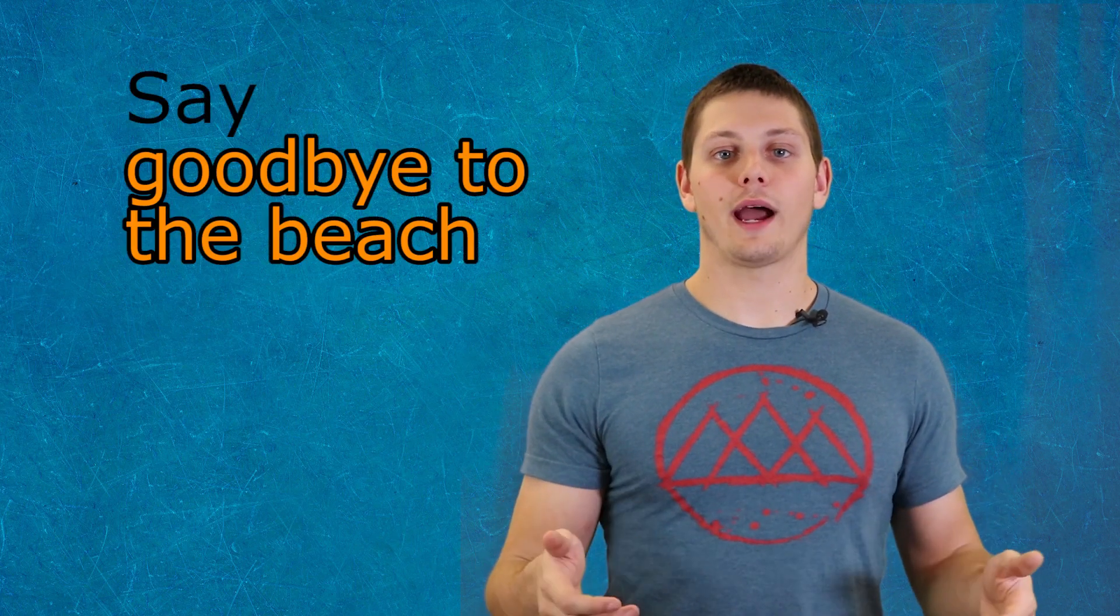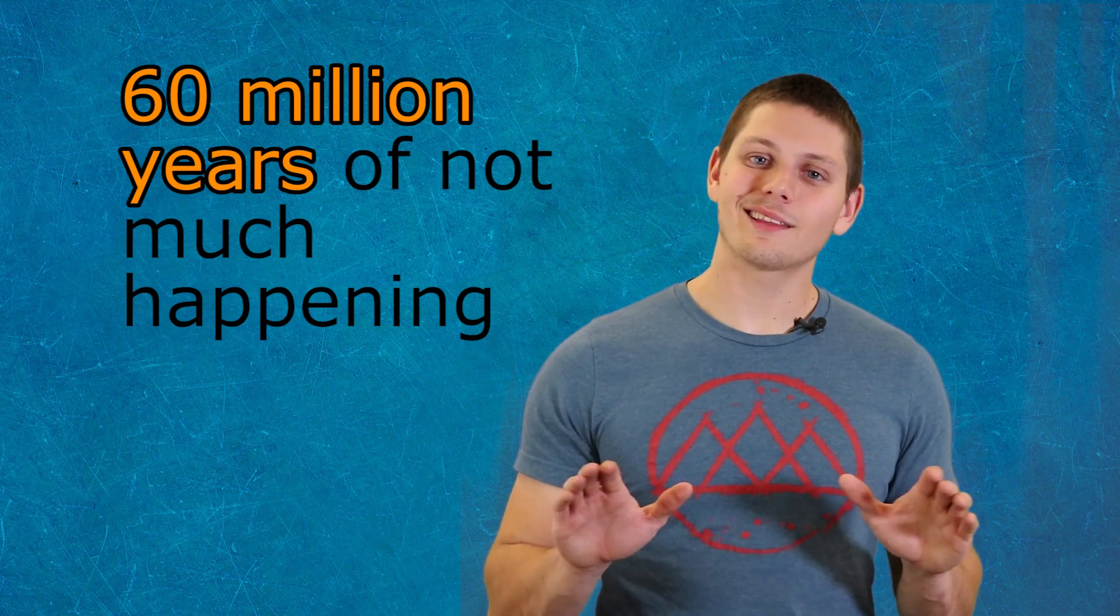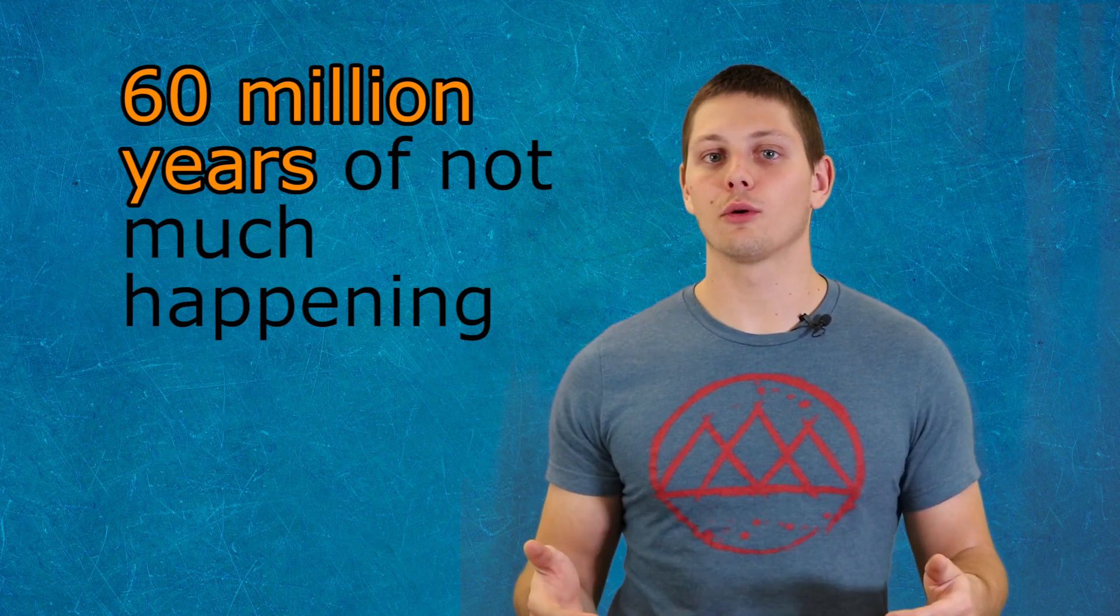Sea level dropped rapidly after the Cretaceous ended about 65 million years ago, leaving the Metroplex high and dry once again. For the next 60 million years, not a ton happened, except for some slow erosion.